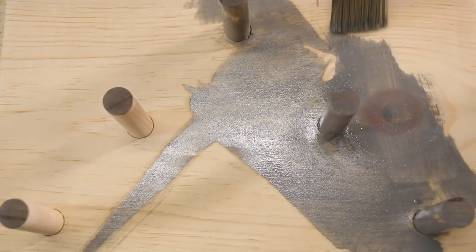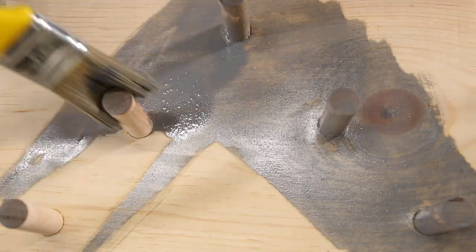Once the glue was dry, I painted my backer. You could just stain it or paint it, but I wanted a little bit of both.